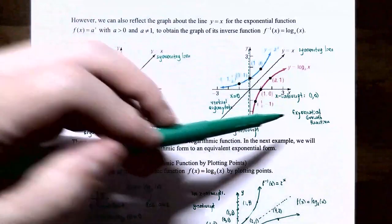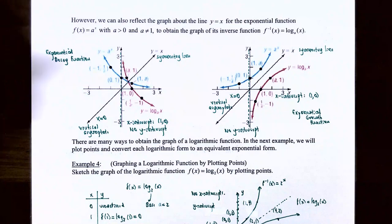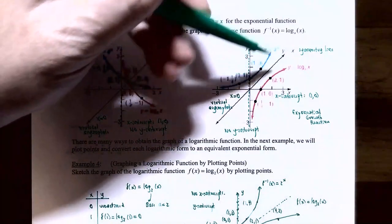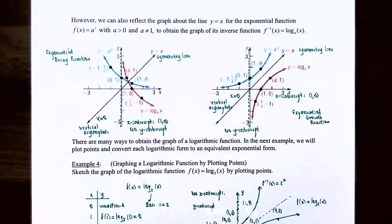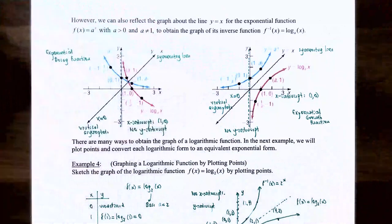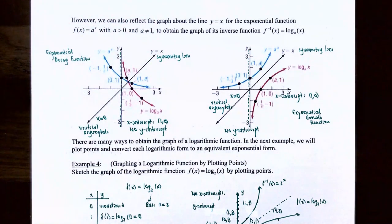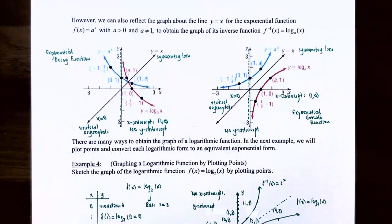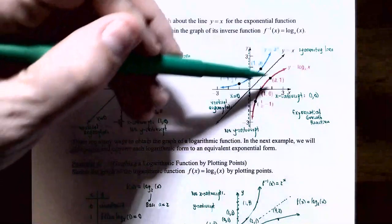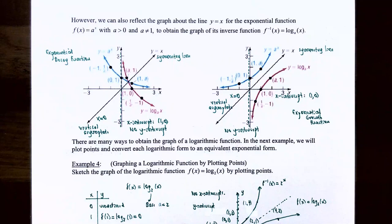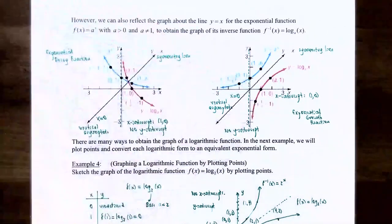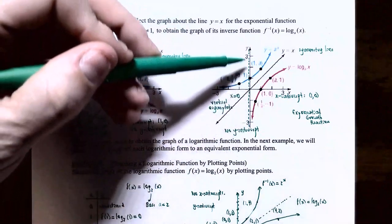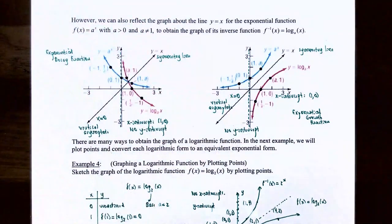For the exponential growth function, the function increases from left to right, passes through the y-axis at 0 comma 1, and increases without bound as x approaches positive infinity. As x approaches negative infinity, the y values approach 0 because there's a horizontal asymptote at y equals 0. Reflecting this graph for y equals base a to the x, where the base is greater than 1, across y equals x, we obtain the logarithmic function y equals log base a of x, where the base is greater than 1. This graph has an x-intercept at 1 comma 0, a vertical asymptote at x equals 0, y values decrease without bound as x approaches 0 from the right, and increase without bound as x approaches positive infinity.